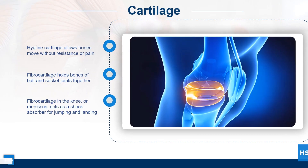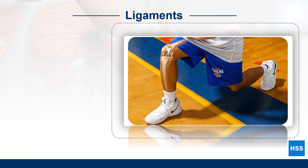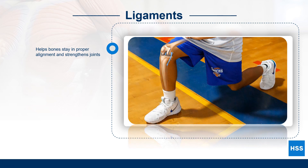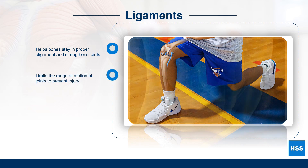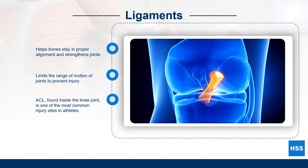Ligaments are band-like connective tissue that hold bones together. Ligaments help bones stay in proper alignment and provide strength and stability to the joint. Ligaments of the knee joint are highlighted in blue in the picture on the right. Ligaments prevent bones from moving beyond the joint's normal range of motion to prevent injury.